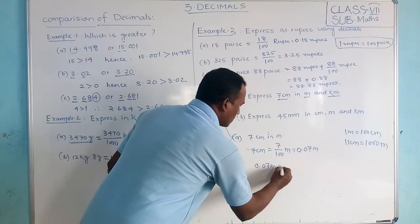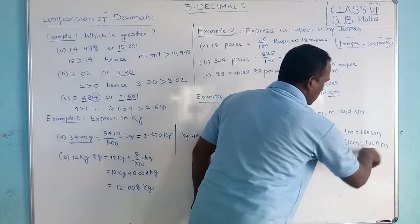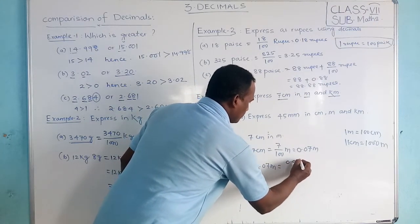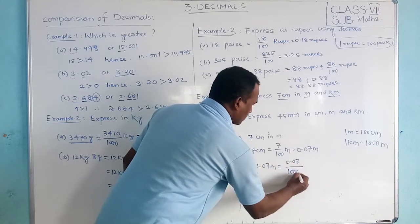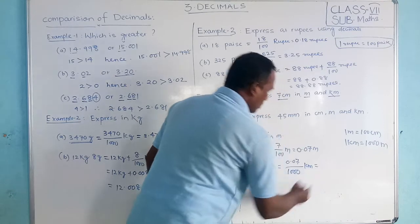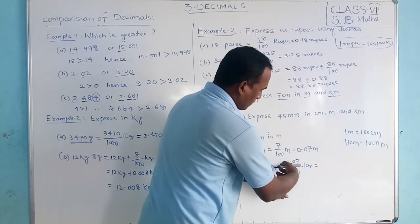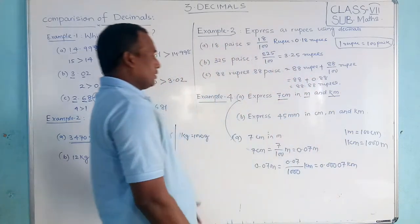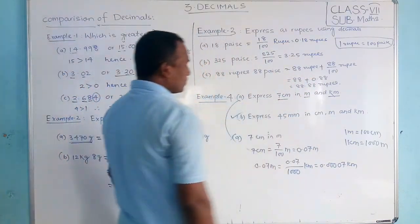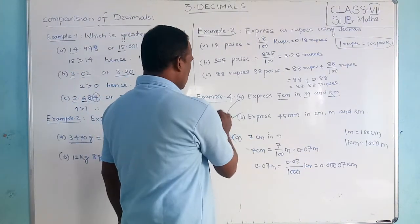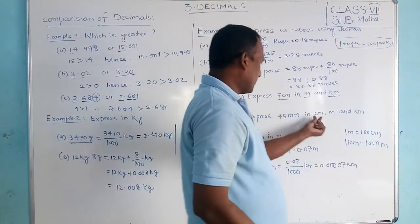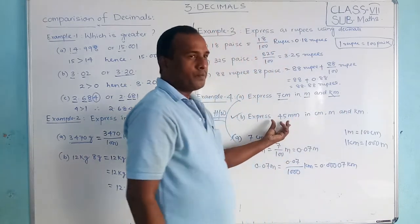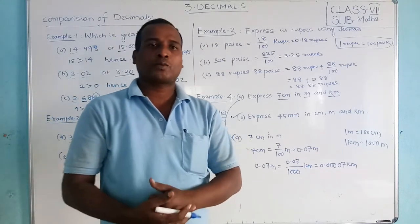Now convert 0.07 meters to kilometers. 1 kilometer equals 1000 meters, so dividing by 1000: 0.07 divided by 1000. There are 3 zeros, and the decimal moves 3 places, giving 0.00007 kilometers. For practice: express 45 millimeters in centimeters, then centimeters to meters, meters to kilometers. Try it yourself — if you can't, I will explain in the next video. Thank you all.